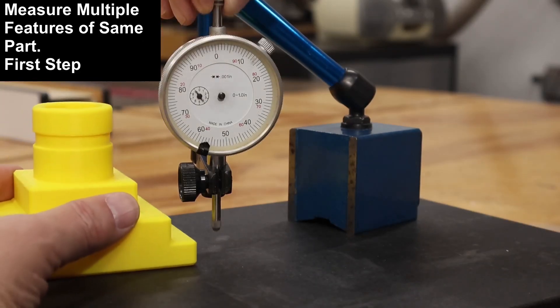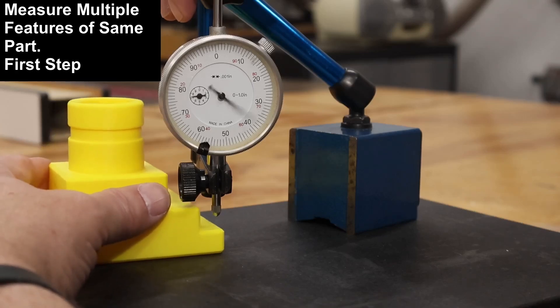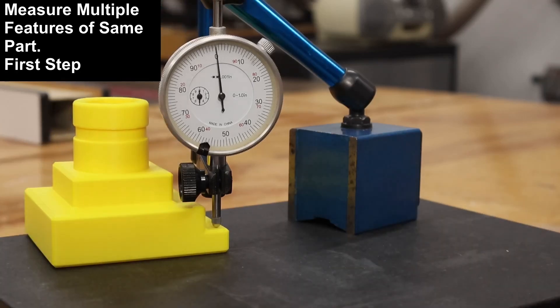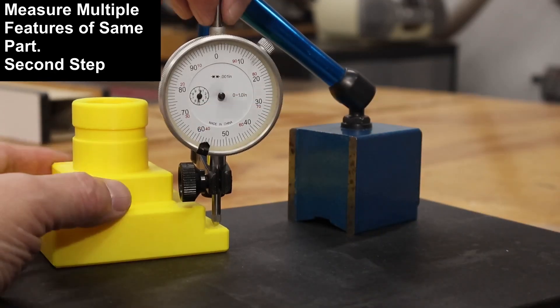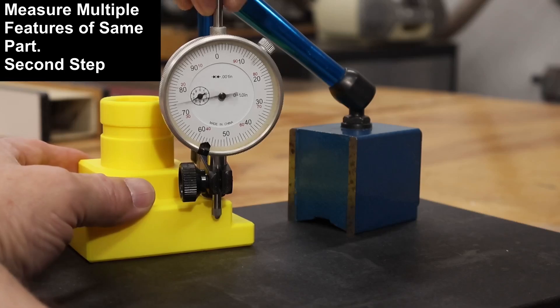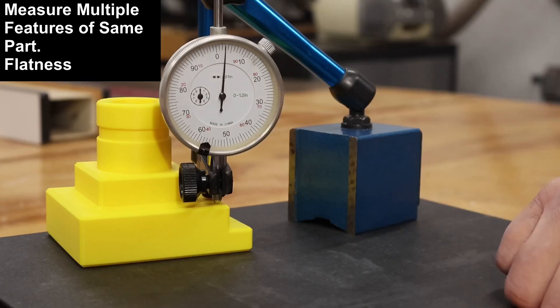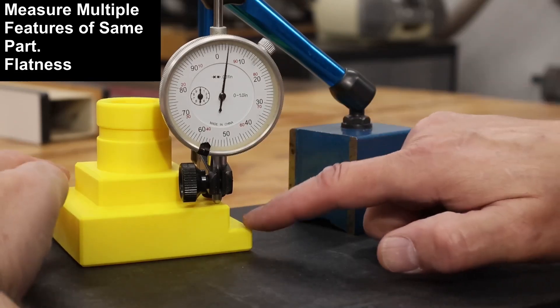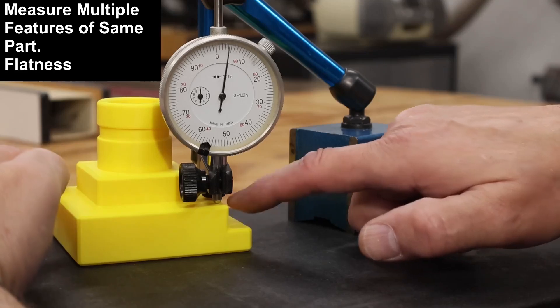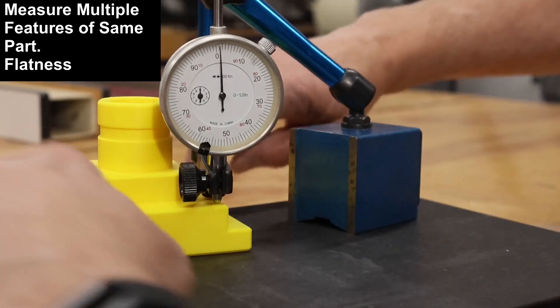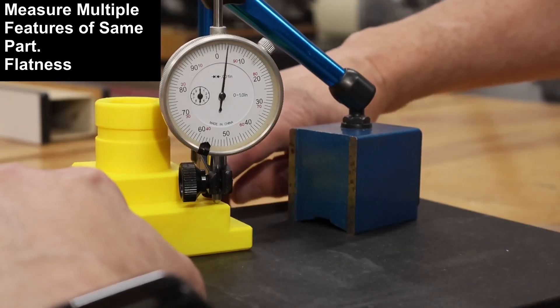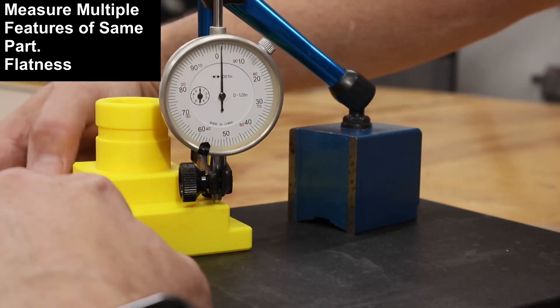In this example, you'll see several features measured on a single work piece without changing the setup. Here we'll measure the first step, then the second step, and then just by rocking the base or rocking the object on this precision ground surface, I can see if the part that I'm making, in this case the 3D printed object, has a flatness or a problem with flatness. Here we can see my 3D printer did not make a very good flat object.